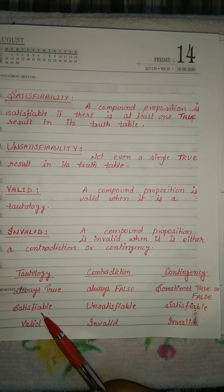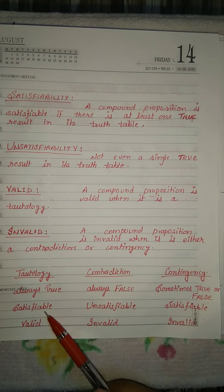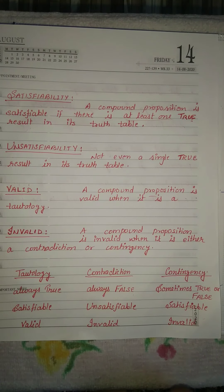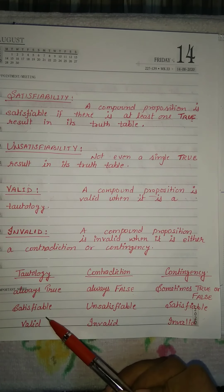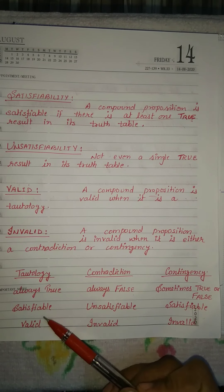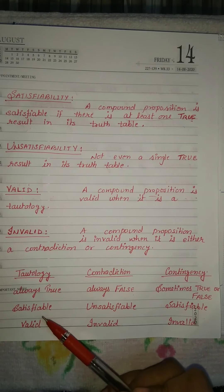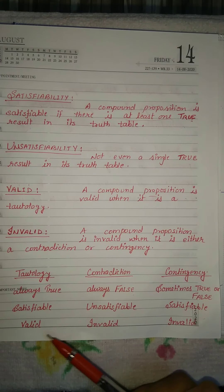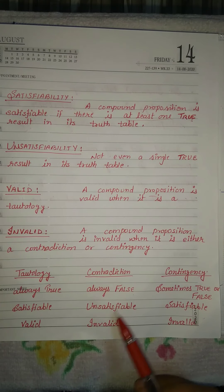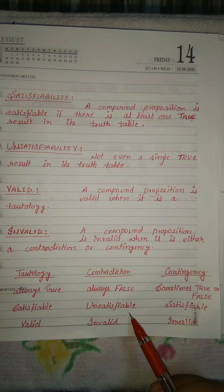Always true — that is, tautology — is satisfiable. In satisfiable, at least one value must be true, and since all values are true in a tautology, it is termed satisfiable. Contradiction is always unsatisfiable.